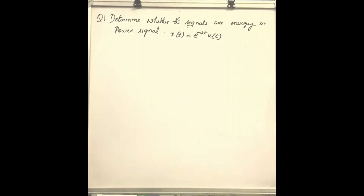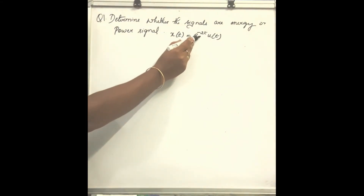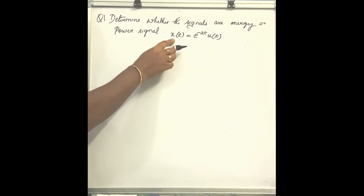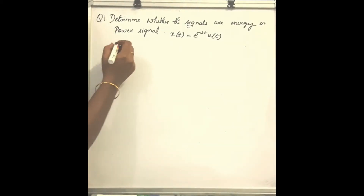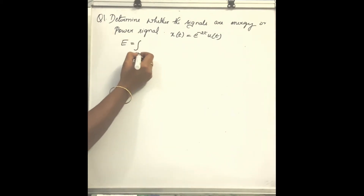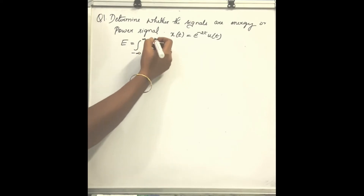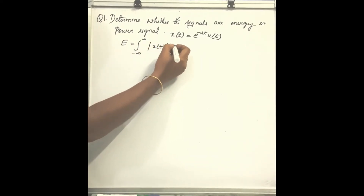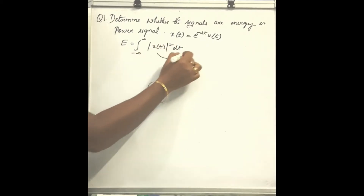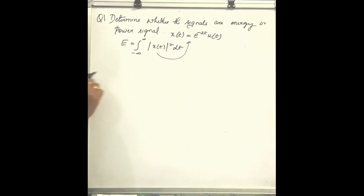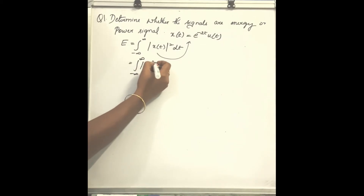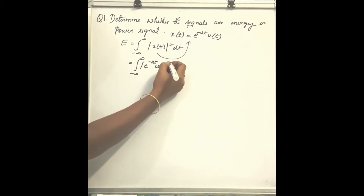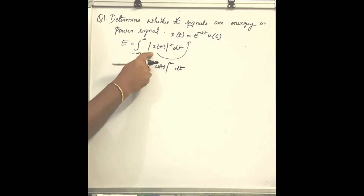Determine whether the signal x(t) = e^(-2t) u(t) is an energy or power signal. Since it is a continuous signal, first write the formula for energy: E is equal to the integral from minus infinity to infinity of x(t) whole square dt. Now substitute x(t) = e^(-2t) u(t), so it becomes the integral from minus infinity to infinity of e^(-2t) u(t) whole square dt.